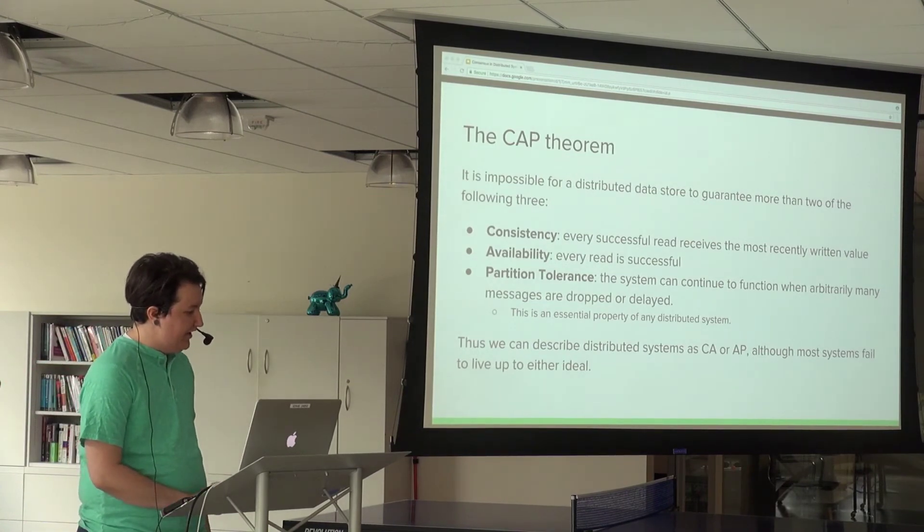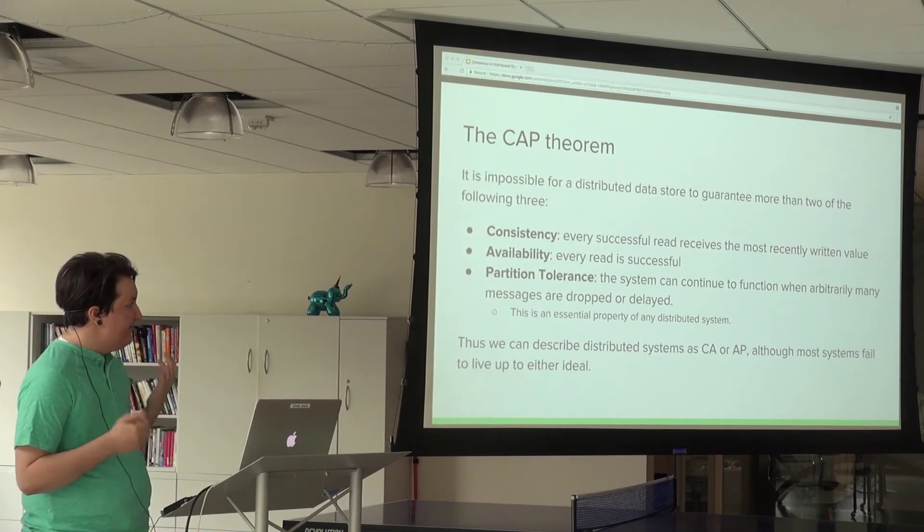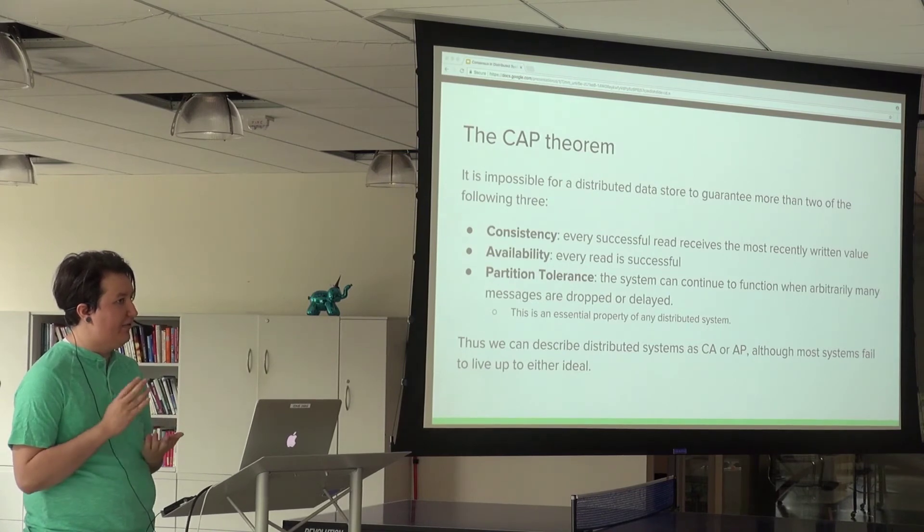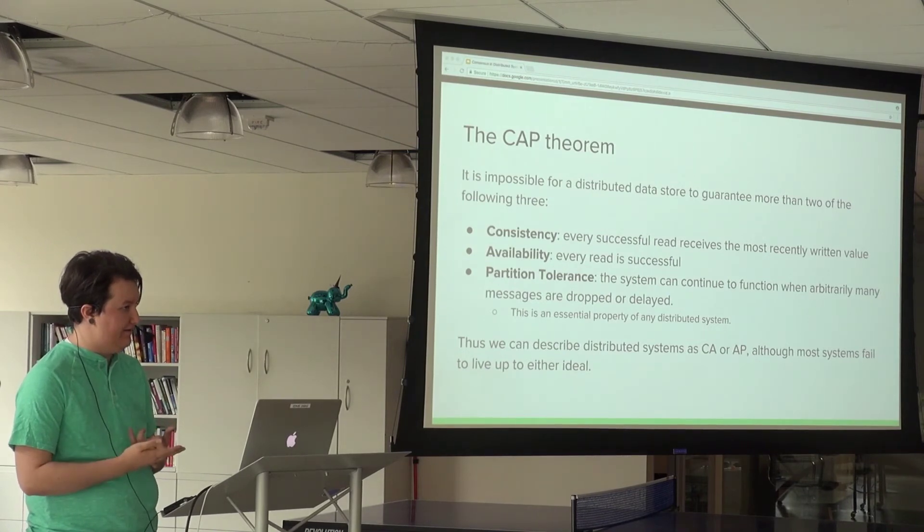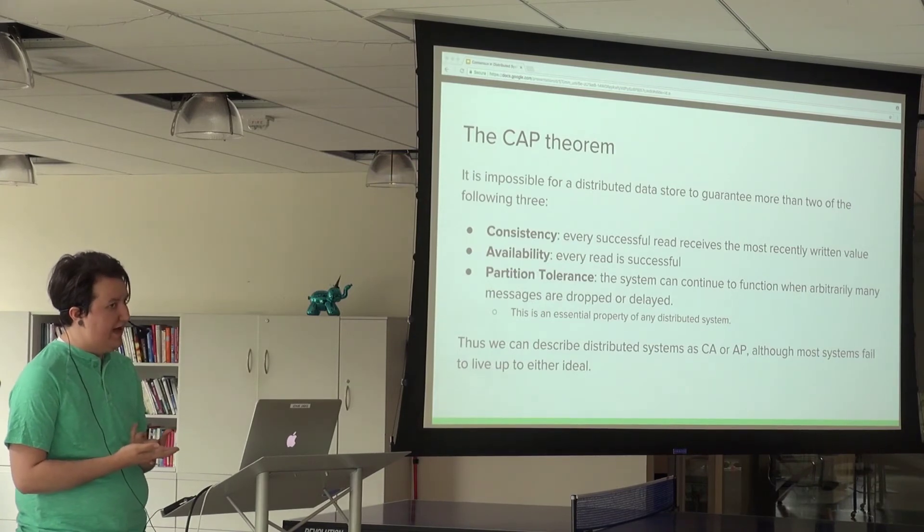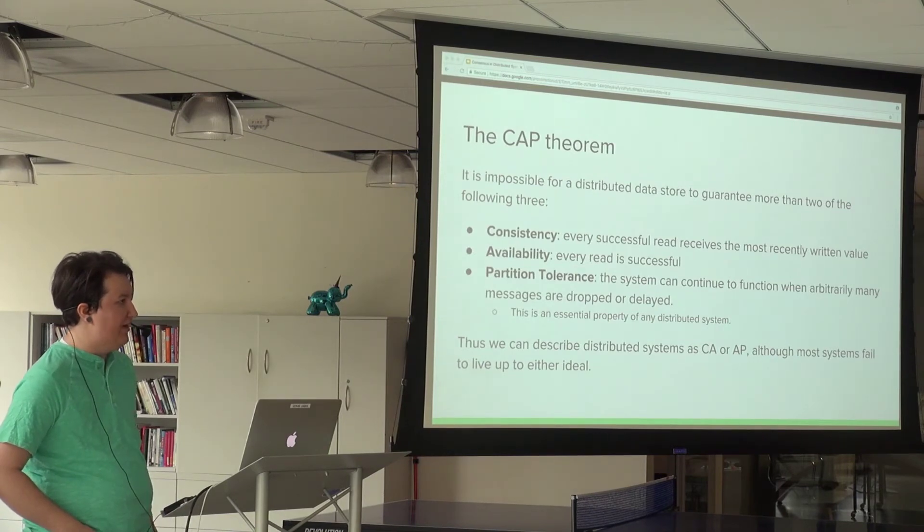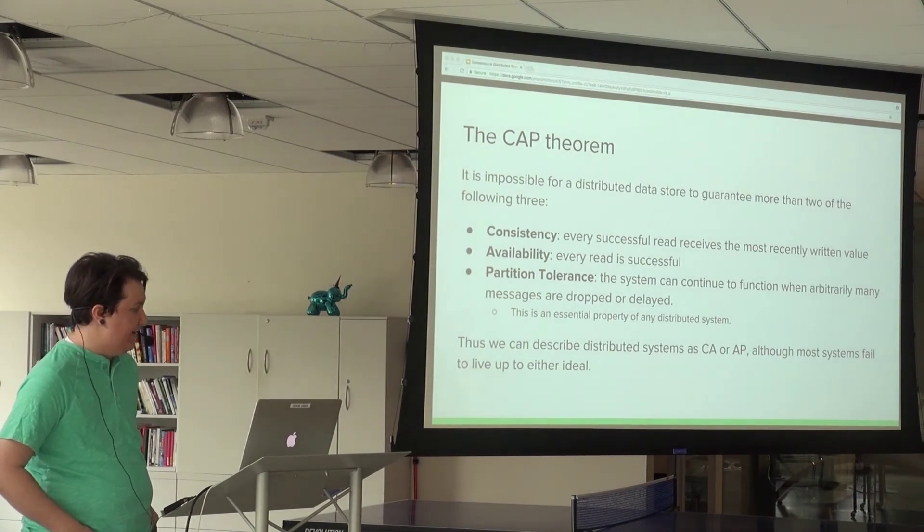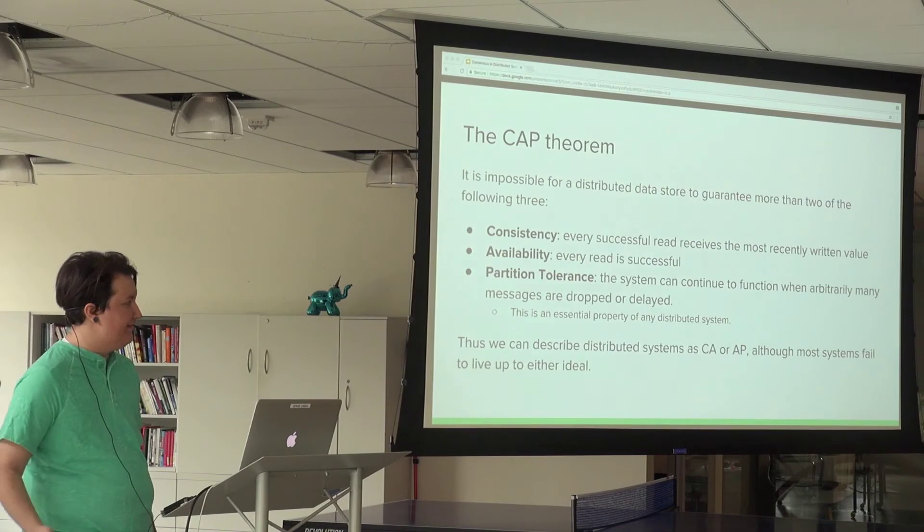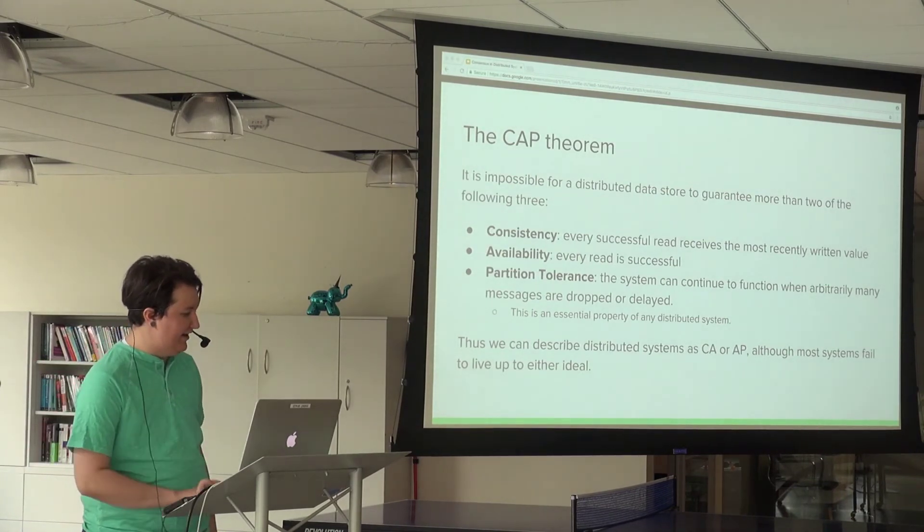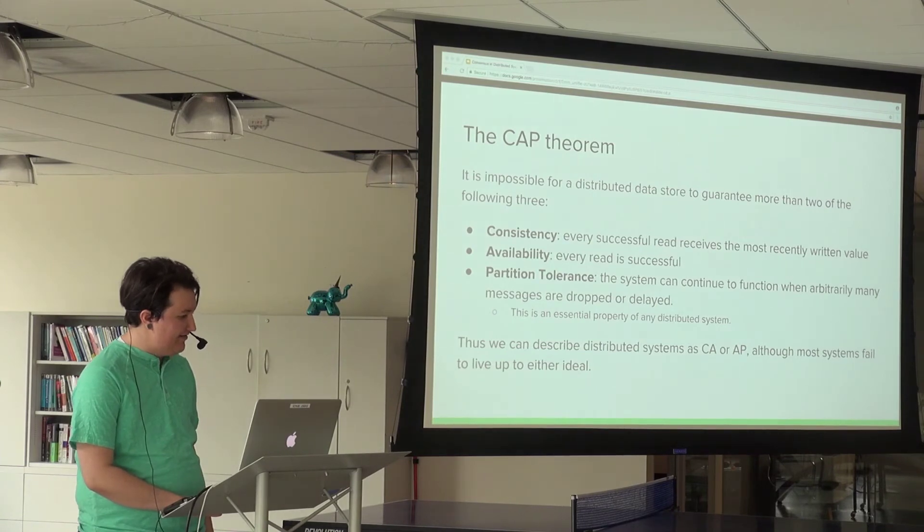The rigorous definitions: consistency is that every successful read receives the most recently written value. Availability says every read is successful. Partition tolerance says the system continues to meaningfully exist if messages are dropped or delayed. That's an essential property - you can't say you want consistency and availability, because then you don't have a distributed system.